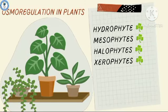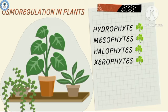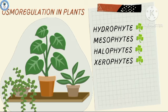On the basis of osmoregulation, plants can be divided into four categories: first is hydrophytes, second is mesophytes, third is halophytes, and fourth is xerophytes.